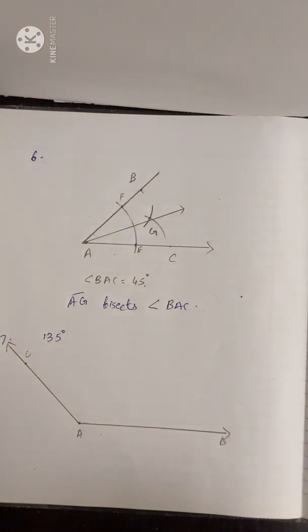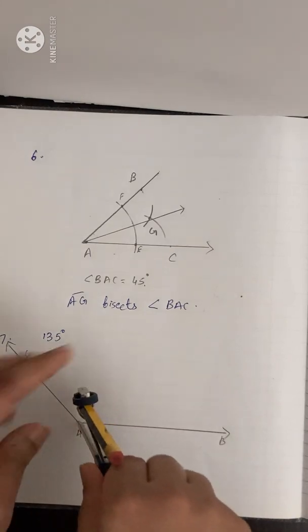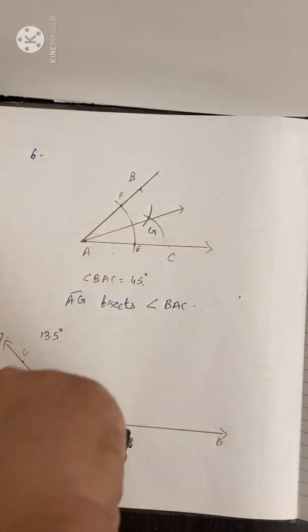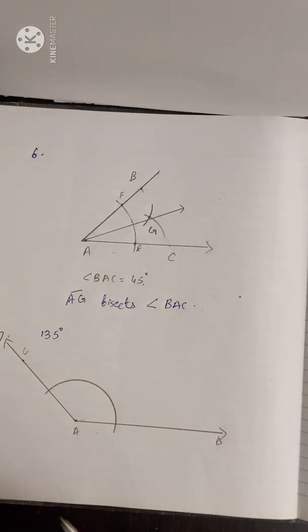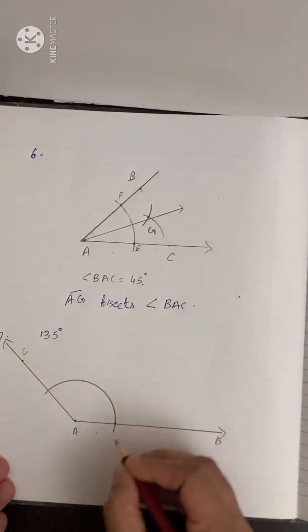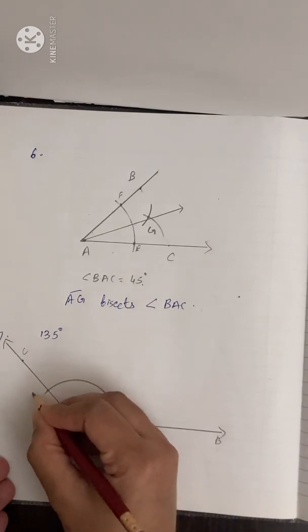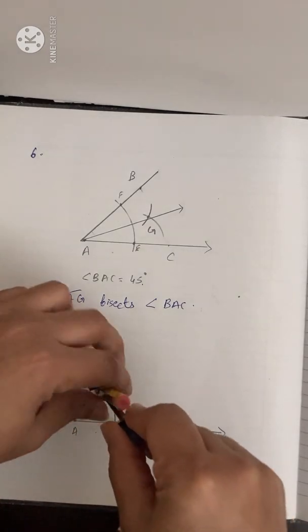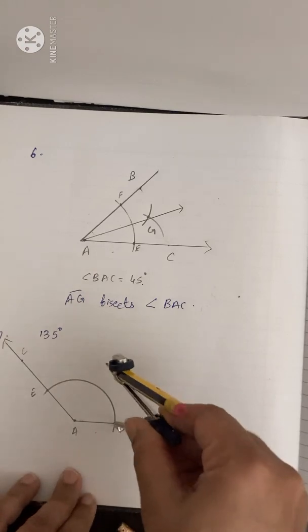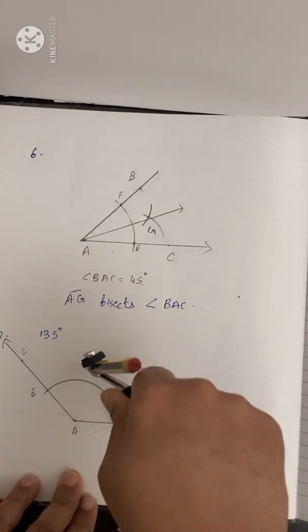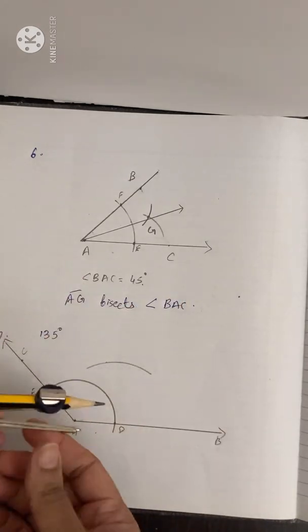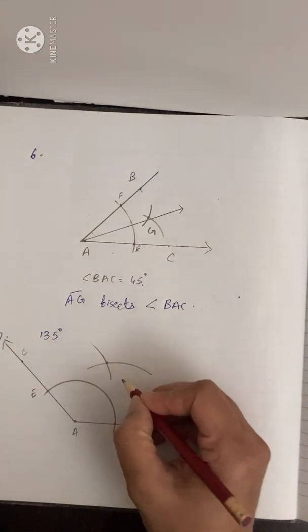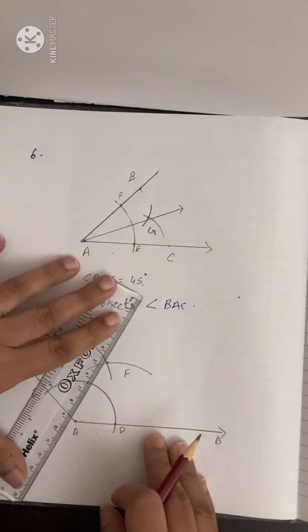Now we are going to construct the bisector of angle CAB. With A as center, take a convenient radius and draw an arc cutting rays AB and AC. Let these points be D and E. With D as center, take a radius more than half of arc DE and draw an arc. With E as center, without changing the radius, draw another arc. Mark this intersection point as F. Join A and F.